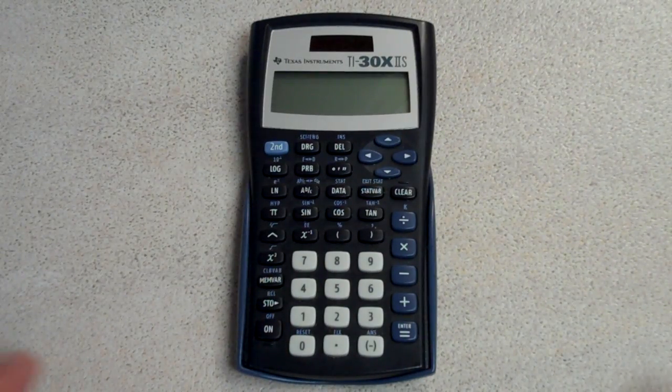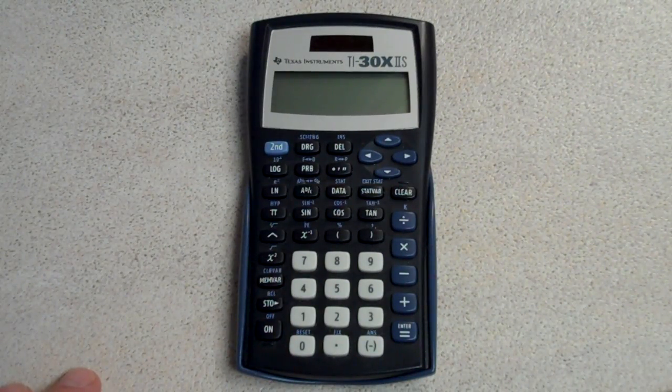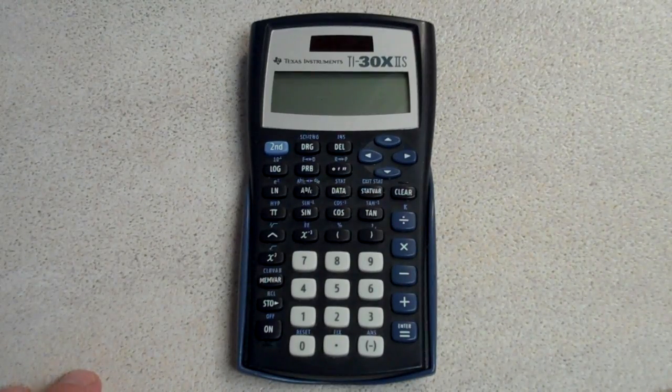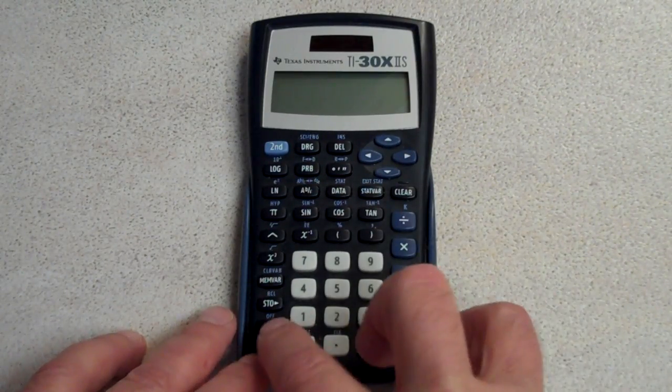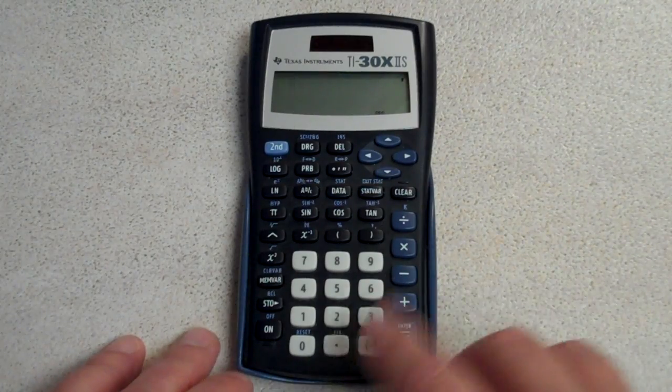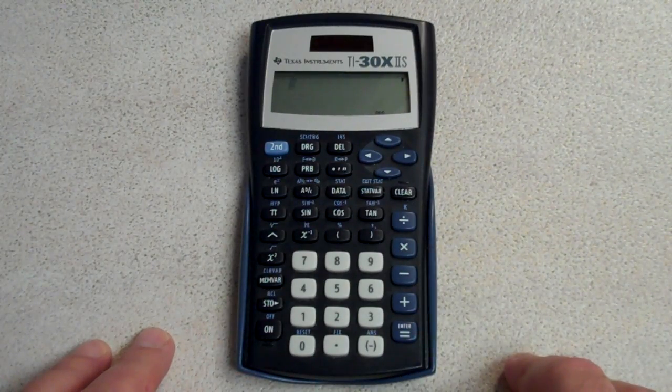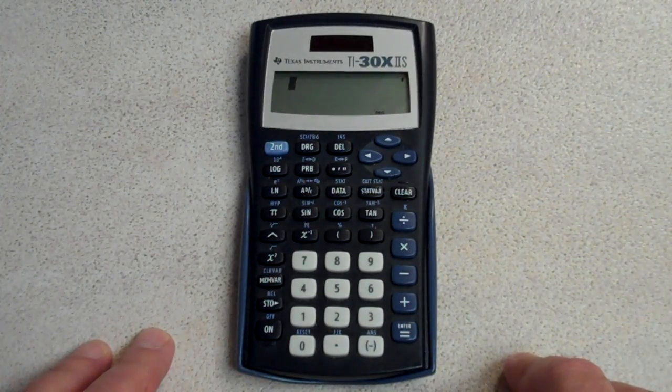Welcome to the short presentation on how to use your calculator to do reciprocal sums on a parallel circuit. First thing we got to do is turn it on and we're going to add up just a few resistors as if they were in a parallel circuit.